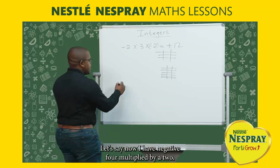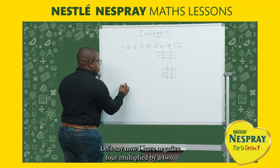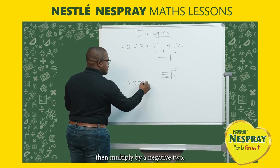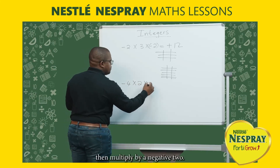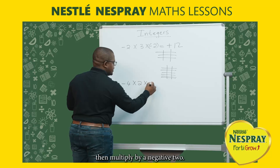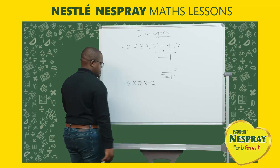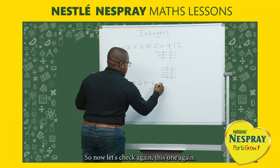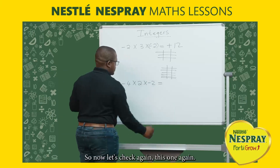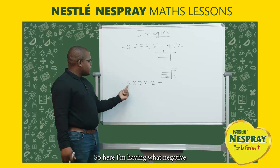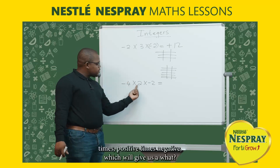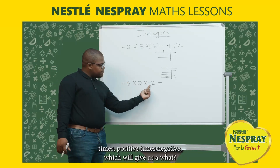Let's check another one. Now I have negative 4 multiply by 2, then multiply by negative 2. So here I'm having negative times positive times negative.